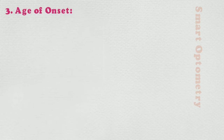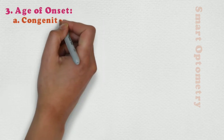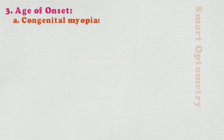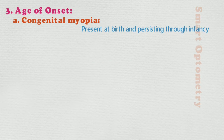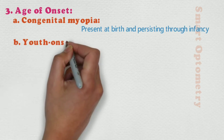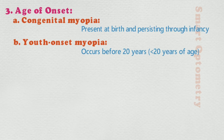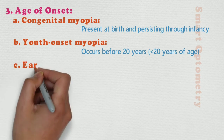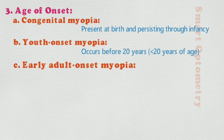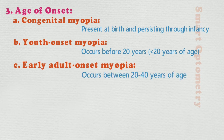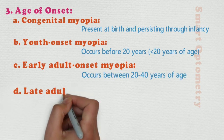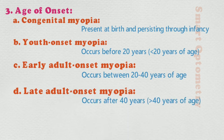3. Age of onset. A. Congenital myopia: present at birth and persisting through infancy. B. Youth onset myopia: it occurs before 20 years. C. Early adult onset myopia: it occurs between 20 to 40 years of age. D. Late adult onset myopia: it occurs after 40 years of age.